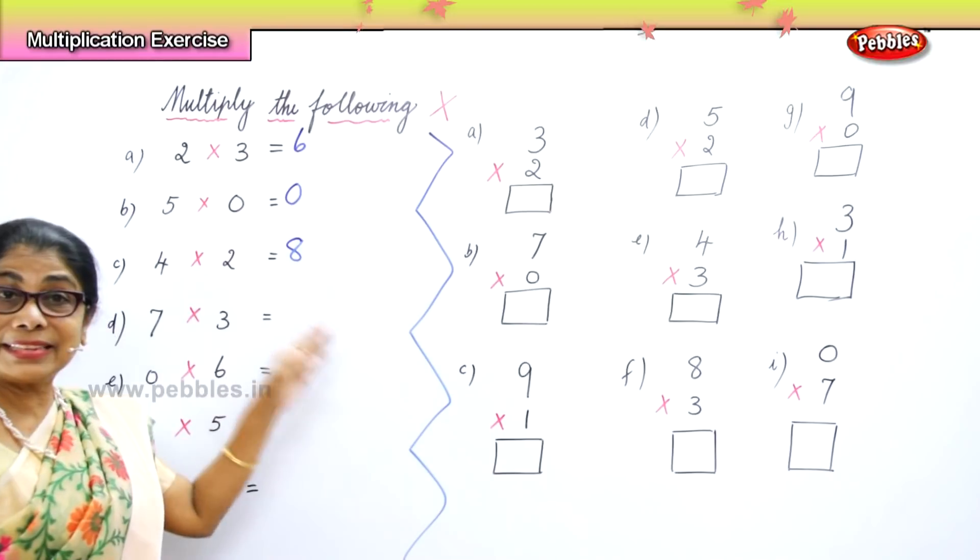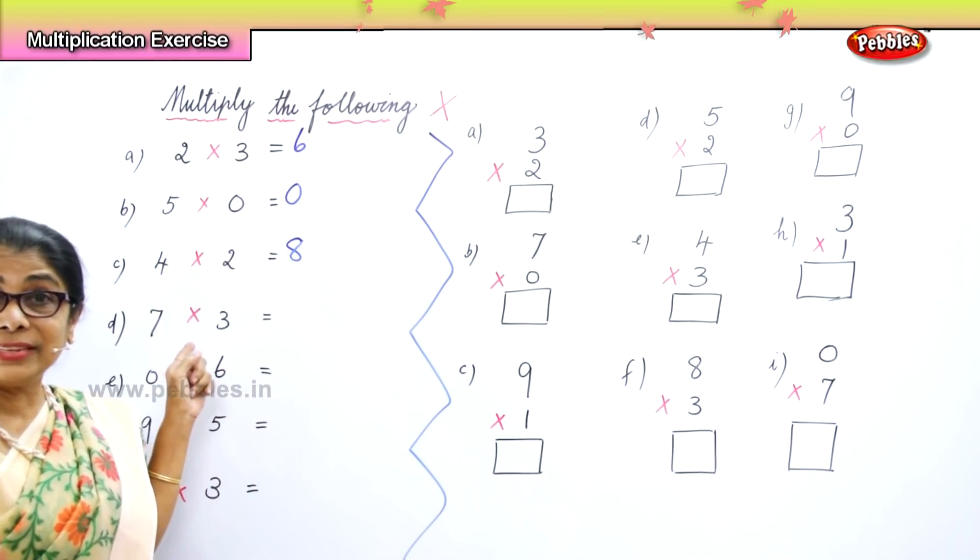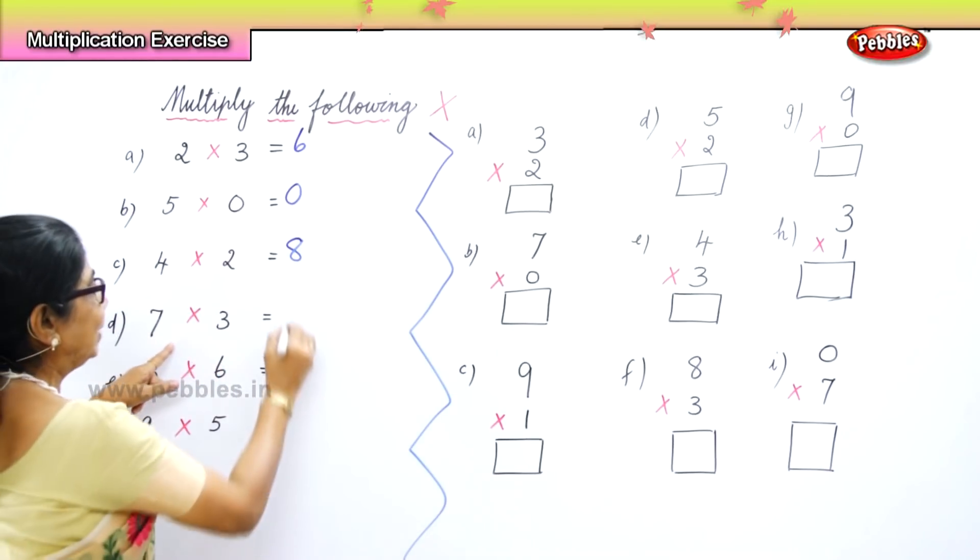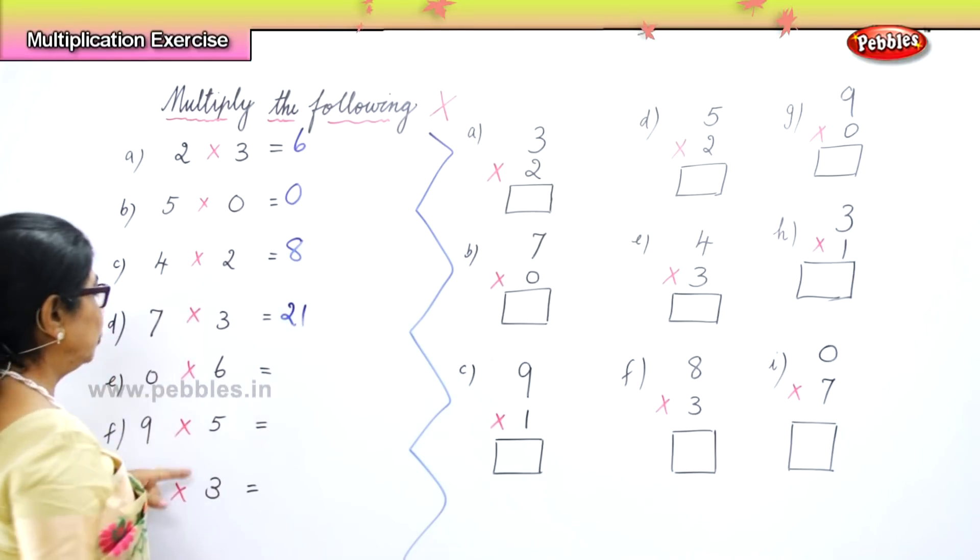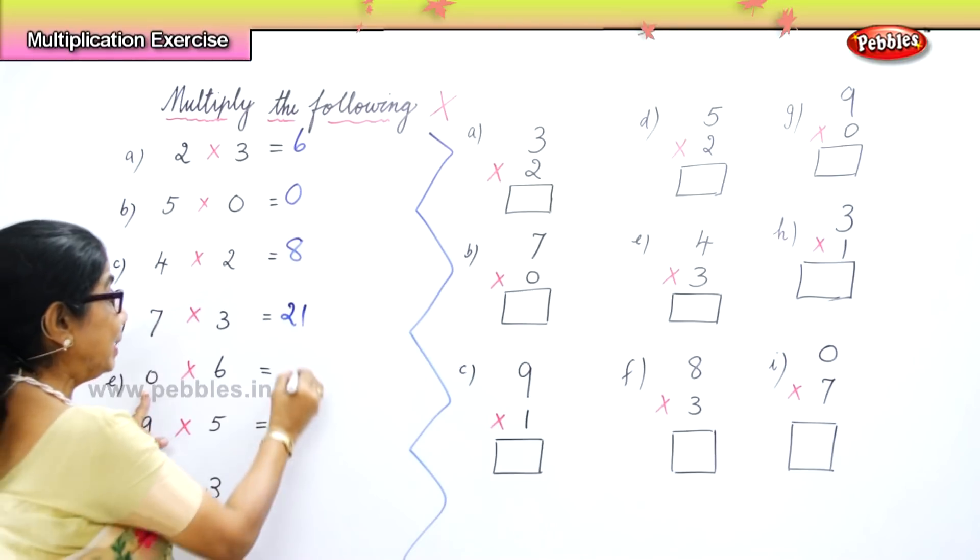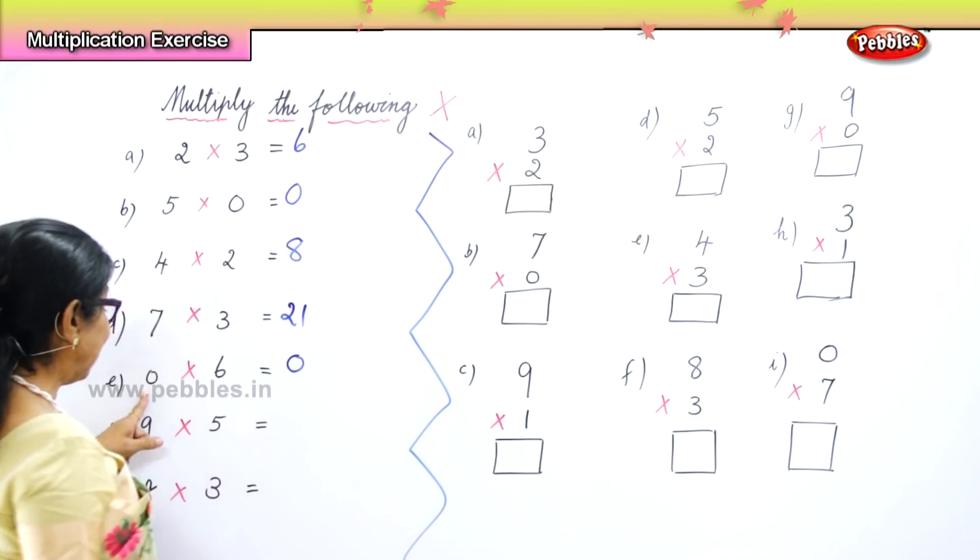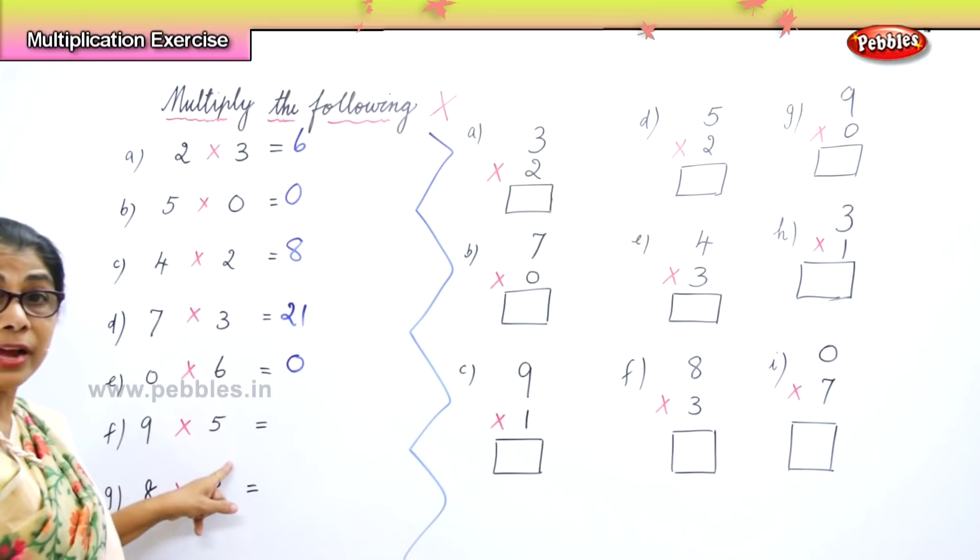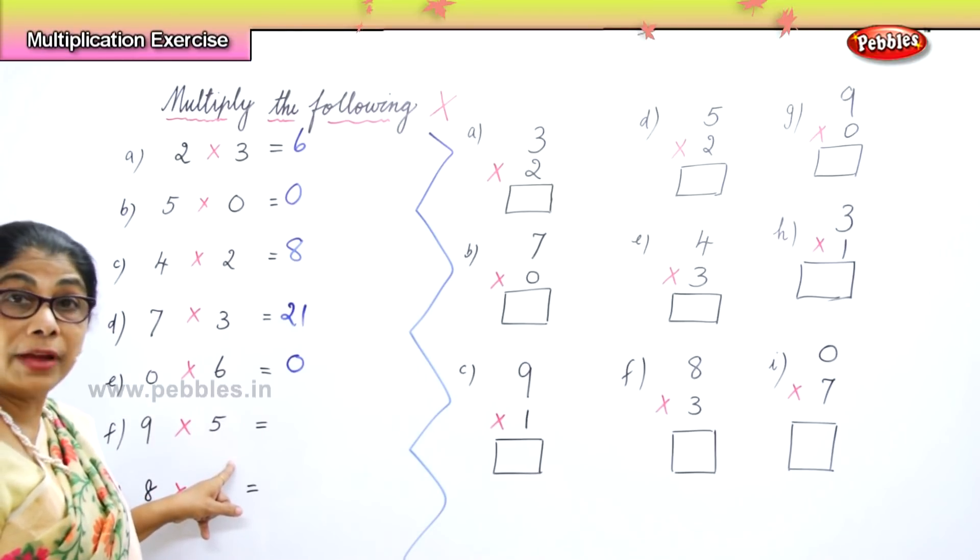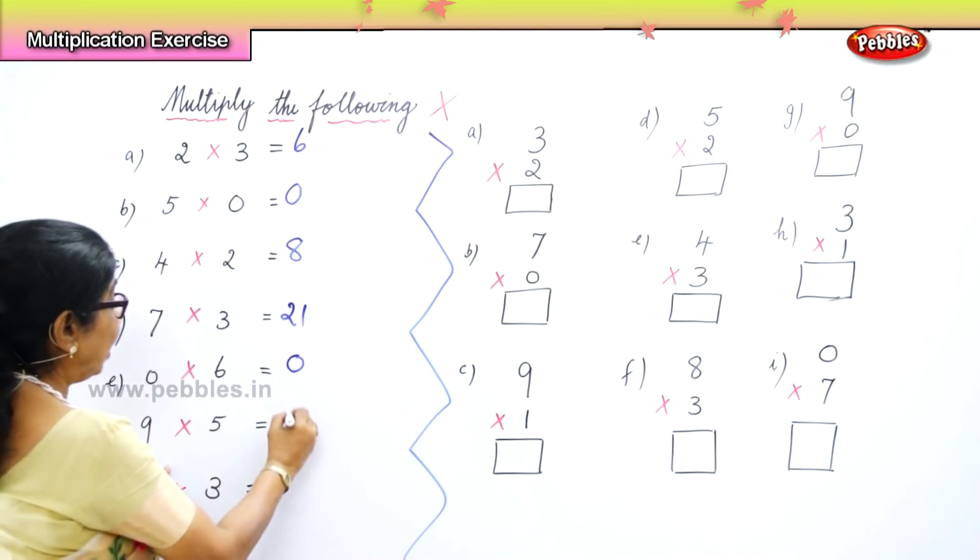Seven, seven threes are twenty-one. Zero into six is zero itself. Nine fives are, nine fives are forty-five.